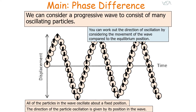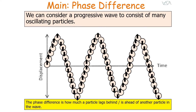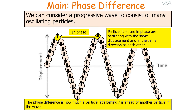You can work out the direction of oscillation by considering the movement of the wave compared to its equilibrium position. In a progressive wave, whilst the particles themselves oscillate, the energy is transferred in a direction. The phase difference is how much a particle lags behind or is ahead of another particle in the wave. Particles that are in phase are oscillating with the same displacement and in the same direction as each other, so in-phase particles have a phase difference of zero.